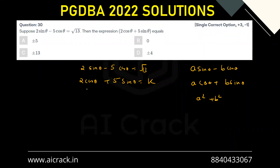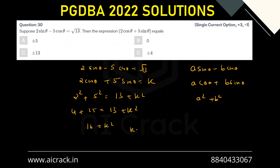We'll do the same process here — square both equations and add them. We get 2² + 5² = 13 + k², which gives 4 + 25 = 13 + k², so 29 = 13 + k², meaning 16 = k², and k = ±4. This kind of observation is important in this question.